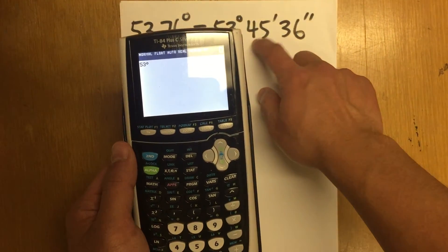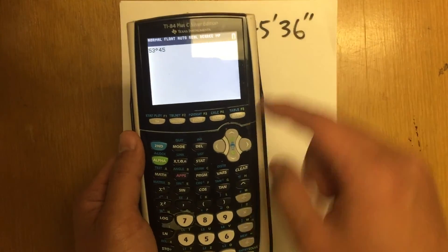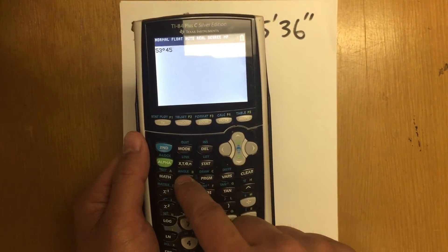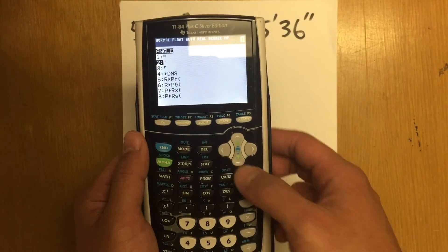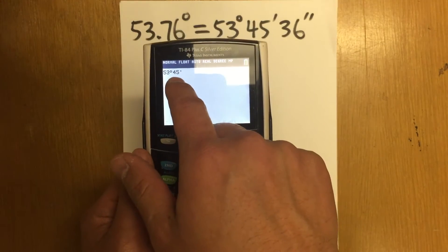And then I have to put down 45. And then we have the minute. So second angle. And that's option number two. And I press enter. At the moment, we have 53 degrees, 45 minutes.